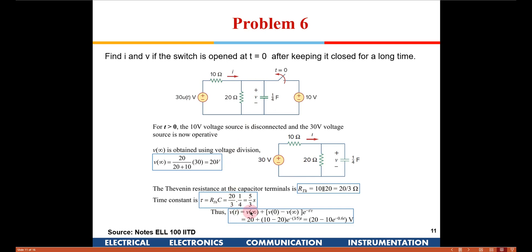We write the standard equation: V(t) = V(∞) + [V₀ − V(∞)] e^(−t/τ). The final value V(∞): with the switch open, the 10 volt source is out of the loop and 30 volts is applied. The 10 ohm and 20 ohm resistors form a potential divider — out of 30 volts, 20 volts appears across the 20 ohm, giving V(∞) = 20 volts. Substituting V(∞) = 20, V₀ = 10, and τ = 5/3 yields the expression for V(t).